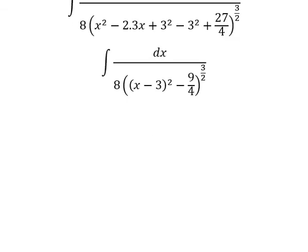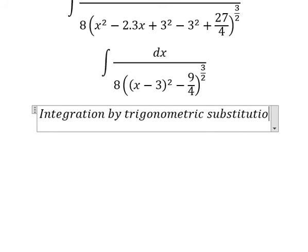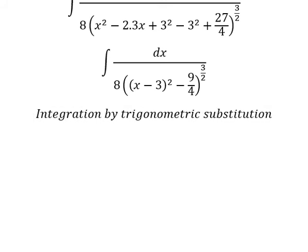Next, we need to use integration by trigonometric substitution. So I will put about x minus 3 equals to 3 over 2 secant of t.